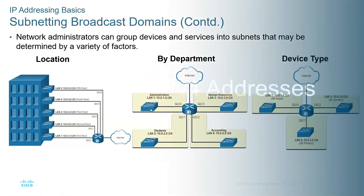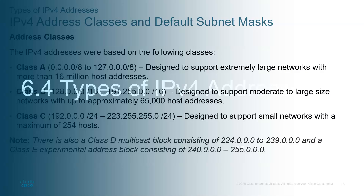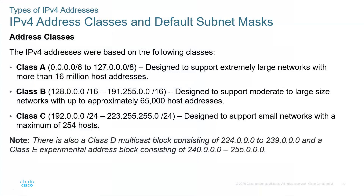There are three original IP address classes from the 1980s design: Class A, B, and C. Class A: if the first number is between 1 and 127, the first byte is your network address. Class B: if the first number is between 128 and 191, the first two bytes are your network address. Class C: if the first number is between 192 and 223, the first three bytes are your network address.